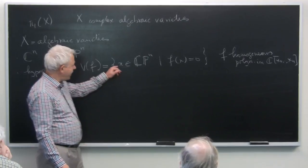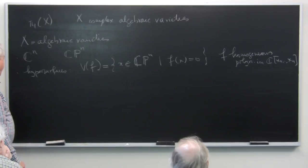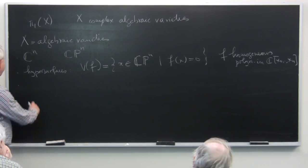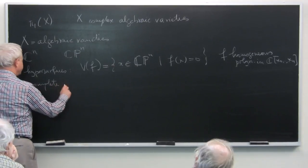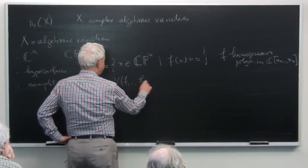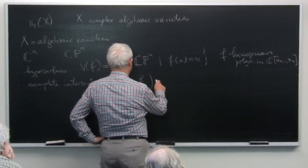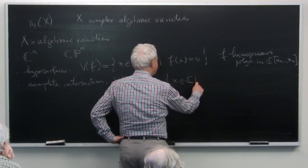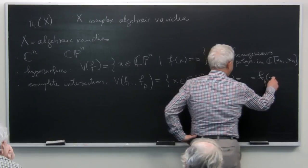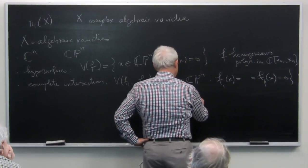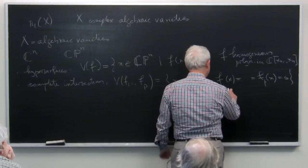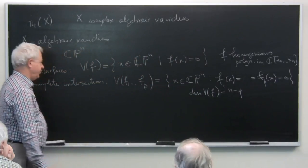We need homogeneous polynomials because otherwise the zero set is not correctly defined. A larger class of algebraic varieties are the complete intersections, where you choose p homogeneous polynomials of various degrees and look for their common zero set. Moreover, you ask that the dimension of this zero set is exactly n minus p — that is, each equation adds a really new condition.